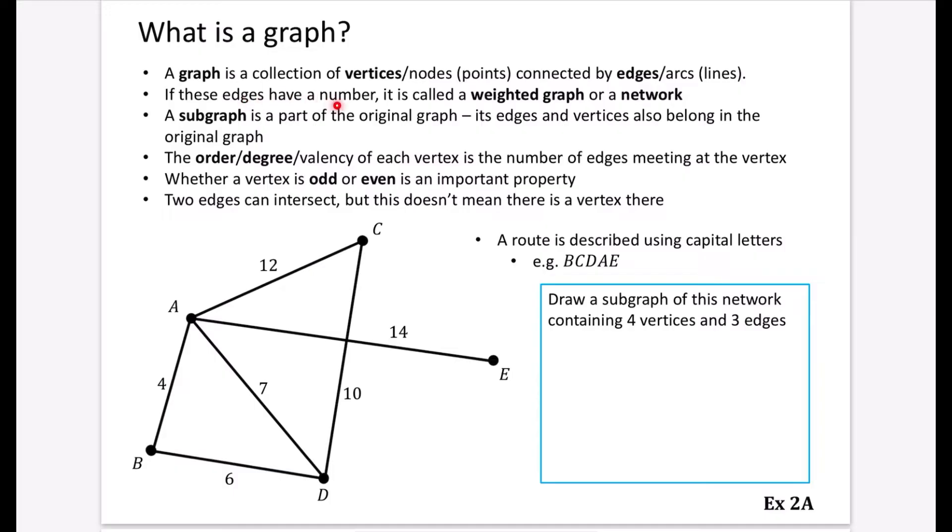So if these edges have a number that's associated with them, it's called a weighted graph or a network. So in this particular one that we've got here, we have got a weighted graph or it's a network because you can see that all of these edges have got a number that's associated with them.